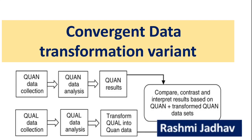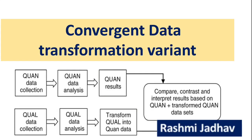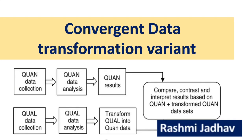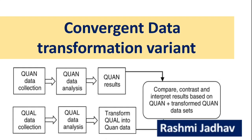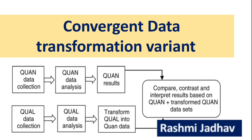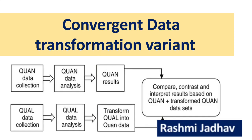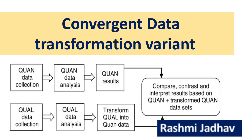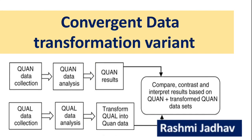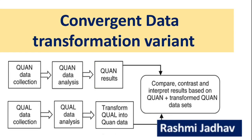The second type is the convergent data transformation variant. Here we collect data separately — quantitative and qualitative — then perform data analysis. For the results, we transform one type of data into another: either quantitative into qualitative or qualitative into quantitative. At last, we compare the data.